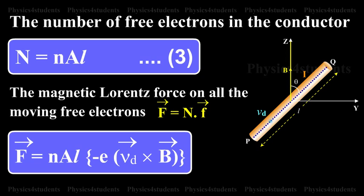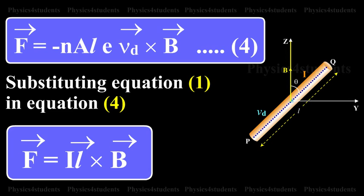The number of free electrons in the conductor is N = nAL. This is equation 3. The magnetic Lorentz force on all moving free electrons is F = Nf. Substituting equations 2 and 3, F = nAL × (-e)(v_d × B) = -nALe(v_d × B). This is equation 4.